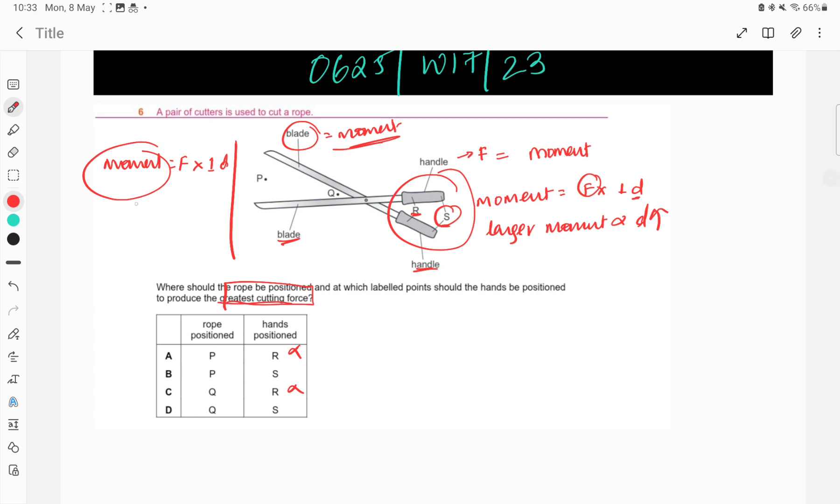And I know F and D are inversely proportional, which means for a larger force, the distance has to be less, which means you will keep the rope at Q. So, exerting the force at S and keeping the rope at Q will produce the largest cutting force.